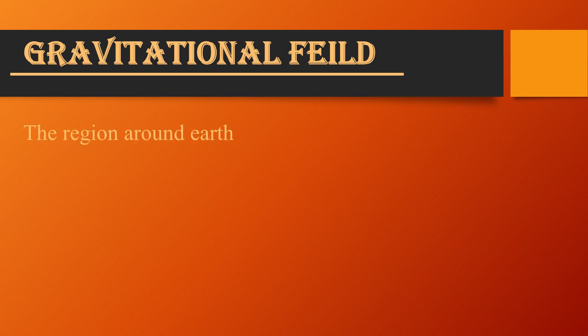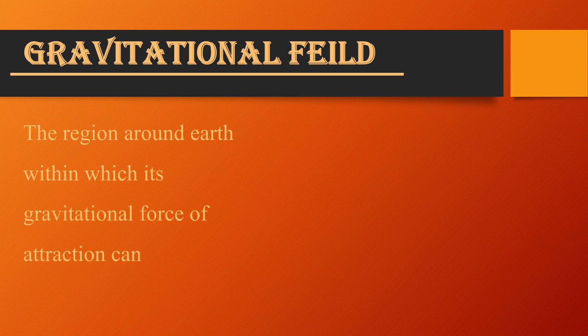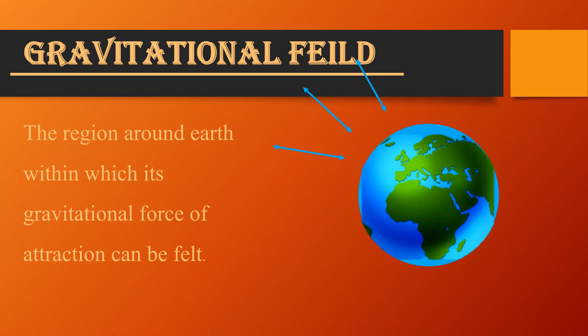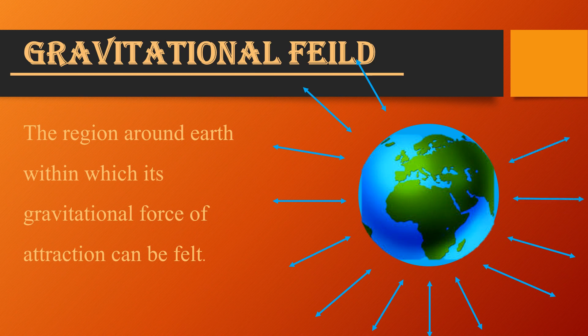Our first definition is Gravitational Field. Field means a region or a specific area, and gravity means the gravitational force of Earth. The definition of Gravitational Field is the region around Earth within which its gravitational force of attraction can be felt — either inside the Earth or outside the Earth. That complete area will be called the Gravitational Field of Earth.